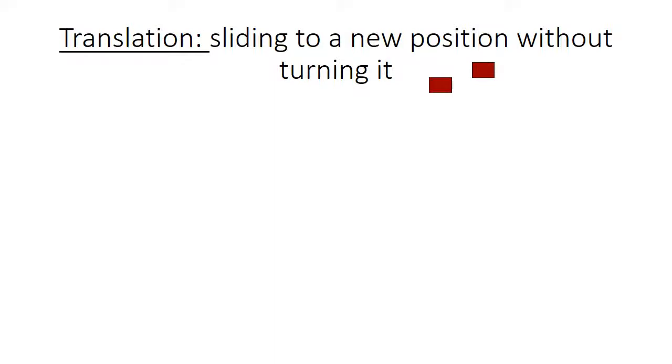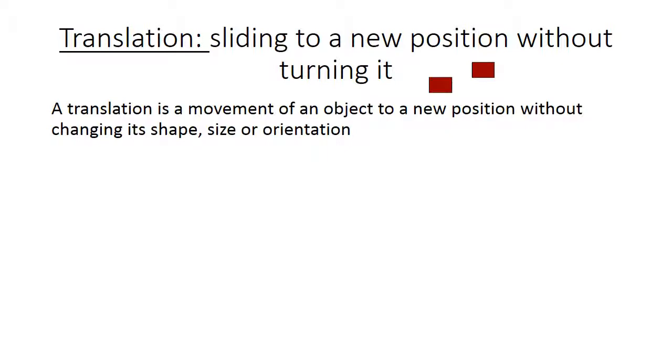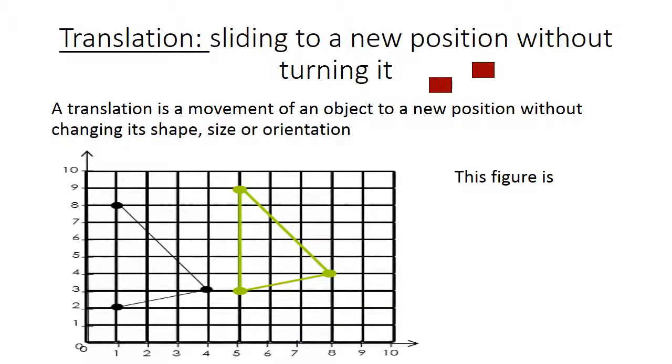Translation: Sliding to a new position without turning it. A translation is a movement of an object to a new position without changing its shape, size, or orientation. This figure is translated four squares to the right and one square up.